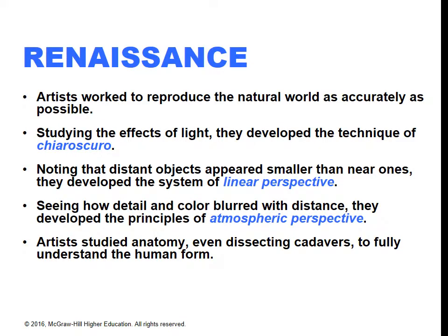Here's an overview of Renaissance practices. Artists worked to reproduce the natural world as accurately as they could. They studied the natural effects of light and developed the technique of chiaroscuro, which means light and dark in Italian. Noticing that distant objects appear smaller, they developed the system of linear perspective — vanishing point perspective. Seeing how detail and color blurred with distance, they developed atmospheric perspective. Think of how last summer when it was smoky, things far away appeared bluer and paler — that's an example of atmospheric perspective. Artists also studied anatomy, even dissecting cadavers, to fully understand the human form.